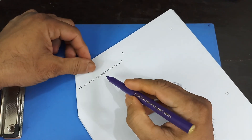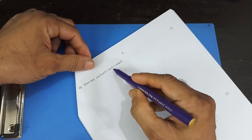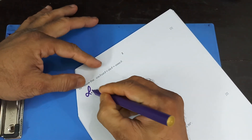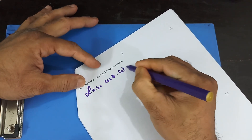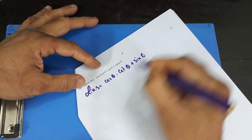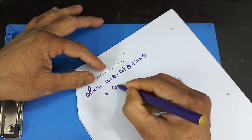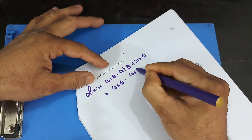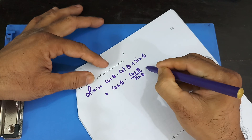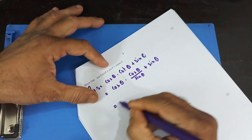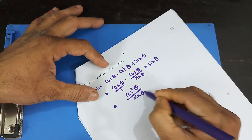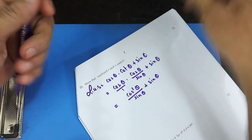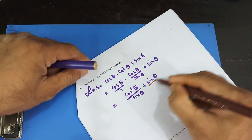The first question says: show that cos θ · cot θ + sin θ = cosec θ. Let's start with the left hand side: cos θ · cot θ + sin θ. We know that cot θ can be written as cos θ / sin θ, so multiplying gives cos²θ on top and sin θ on the bottom, plus sin θ.